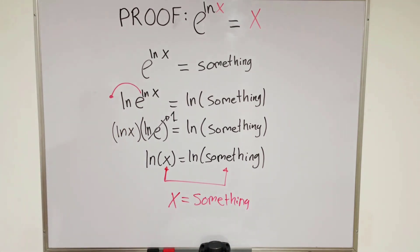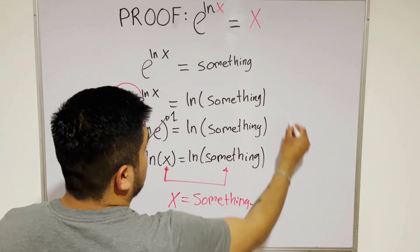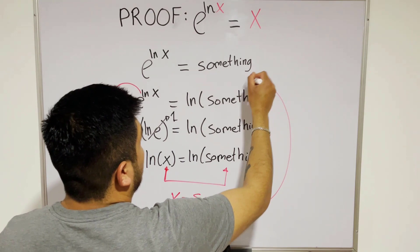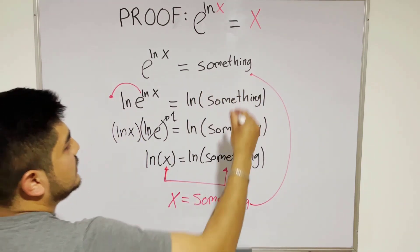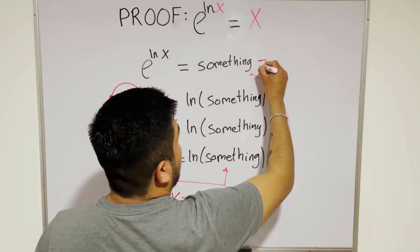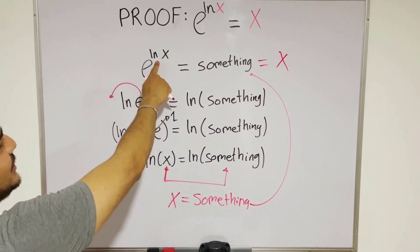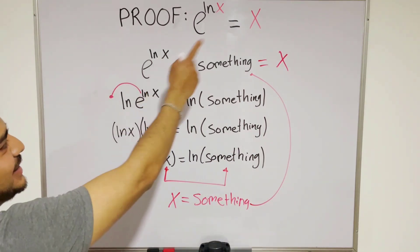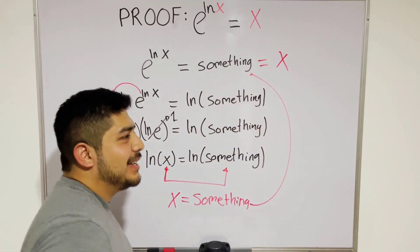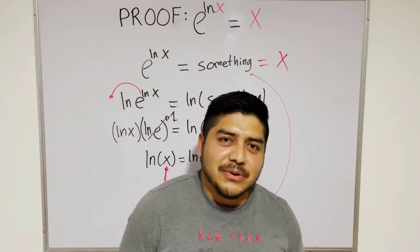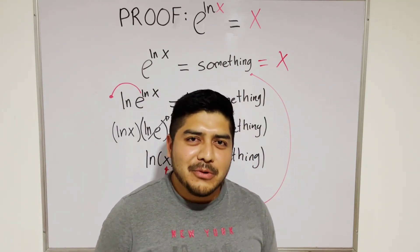And we take a look at the first equation — something. But now something equals x. And we have proved that e to the ln x equals x. Thanks for watching this video, and I hope you subscribe.